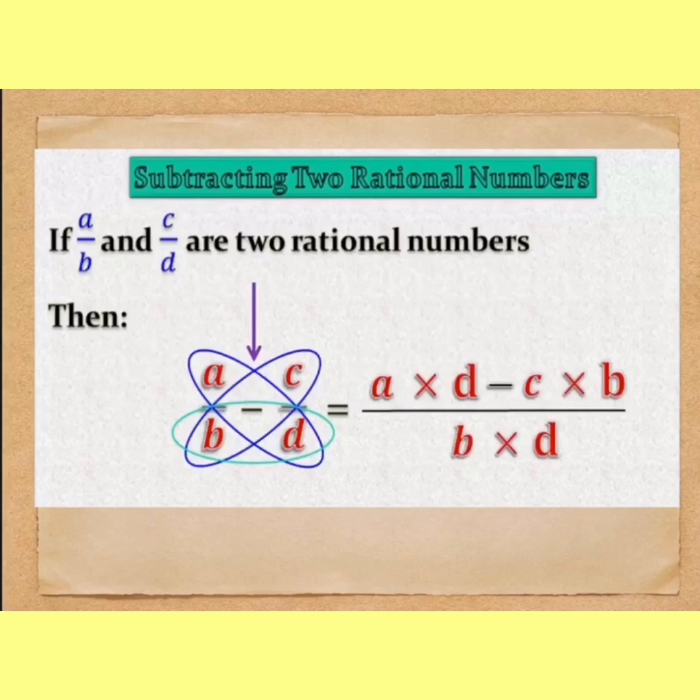In next slide, if you want to subtract two rational numbers with unlike denominators, then the method will be same: ad minus bc upon bd.